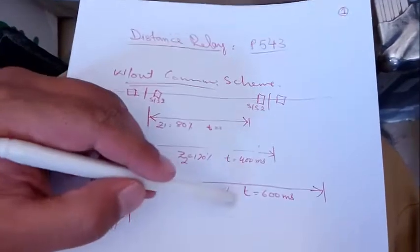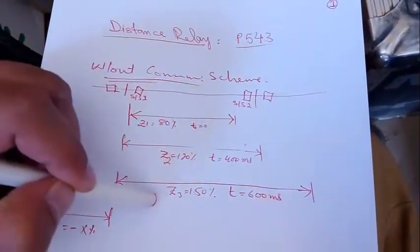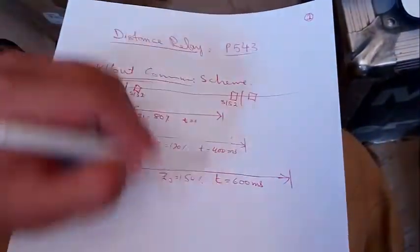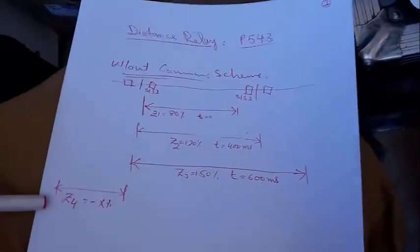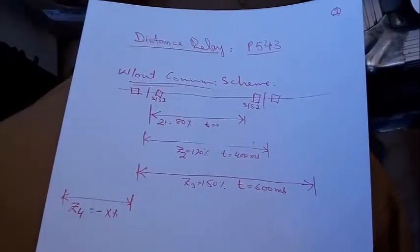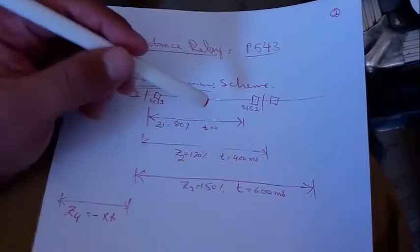If the fault is after 80% — around 90%, 95%, or 100% — the relay will trip in time zone two, after 400 milliseconds. If the fault is at 120% to 150% of the line, it falls in zone three and the relay trips after 600 milliseconds. These values are generally assumed values which can be set according to our requirements. Zone four is in the reverse direction. Now we will show how to draw these zones.